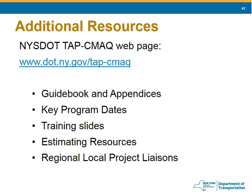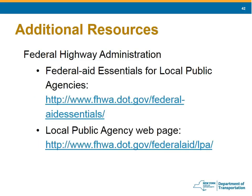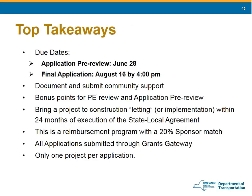Additional resources include Federal Highway websites as well. The top takeaways from today's workshop: the due dates are very important — there's no wiggle room. The application pre-review is due June 28th; the final application is due August 16th at 4 p.m. Document and submit community support. With 192 projects last time and only 80 awarded, make sure you have community support. The bonus points for the PE review and application pre-review total 10 points and could put you over the top.